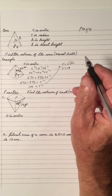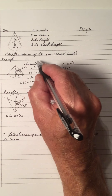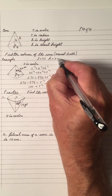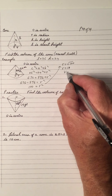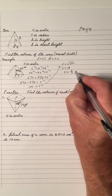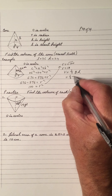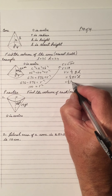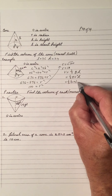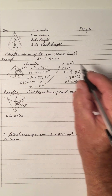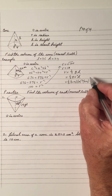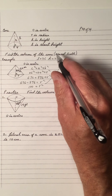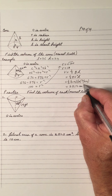Now we have a slant height of 26, a height of 24, and now we've got a radius of 10. So the volume of a cone is one-third base area times height — one-third π R² H. That's one-third times 3.14 times 10 squared times the height 24. When you multiply all that out with a calculator, you get 2512 cubic meters.